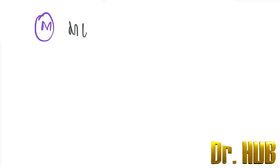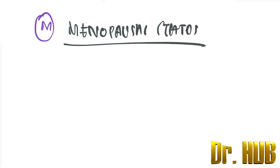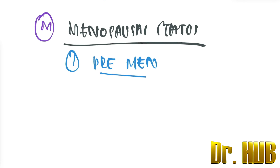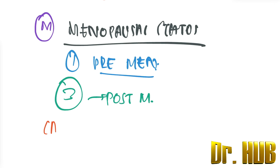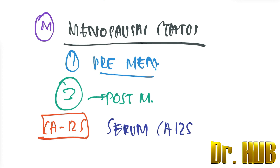Next, M stands for menopausal status. The menopausal status is coded as one for premenopausal and three for postmenopausal. Next is CA-125, which is the serum CA-125 level measured in IU per mL.